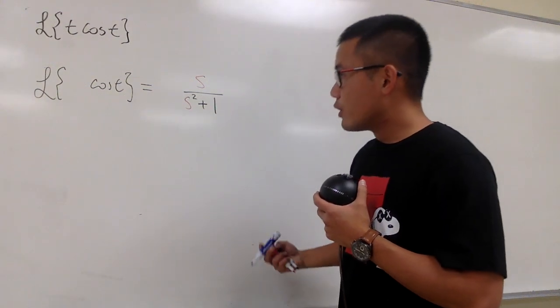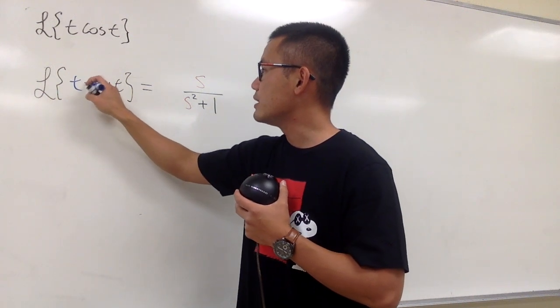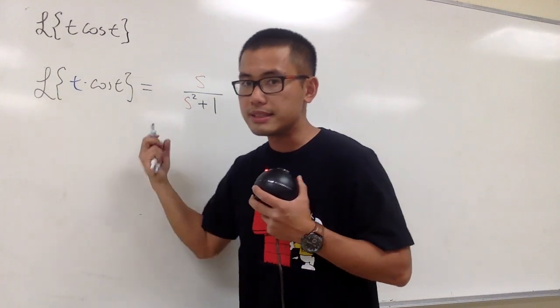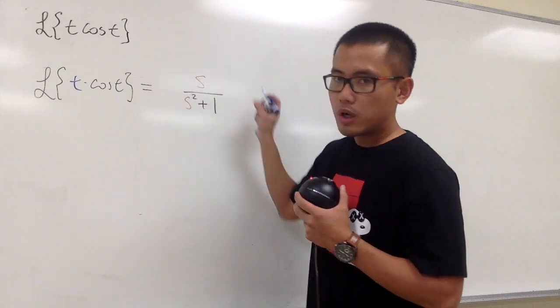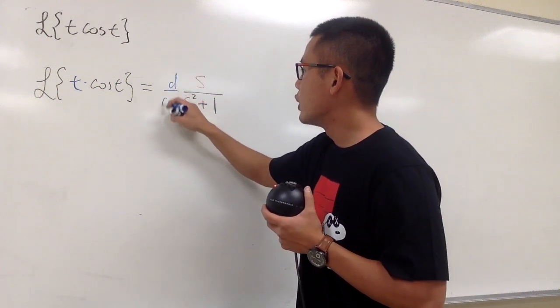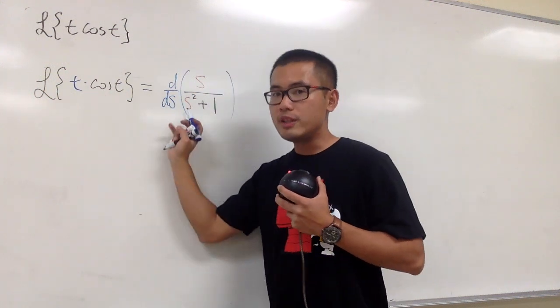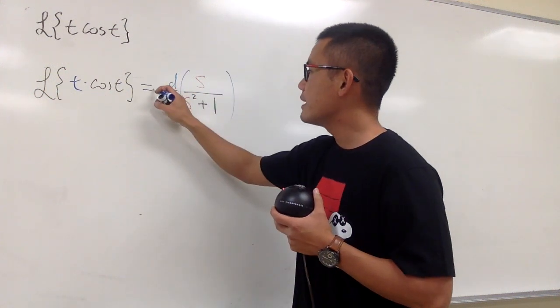And now we have this t right in front. Remember that when we multiply t with cosine t inside the Laplace world, in the s world, all we do is differentiate this with respect to s. And don't forget, we differentiate it one time and also multiply it by negative 1 one time.